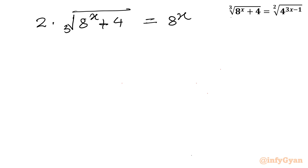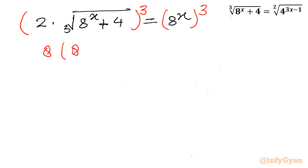Let us cube both sides. So the equation becomes 8 times (8^x + 4) equal to (8^x)^3.